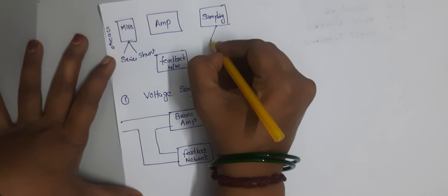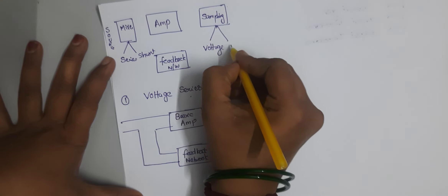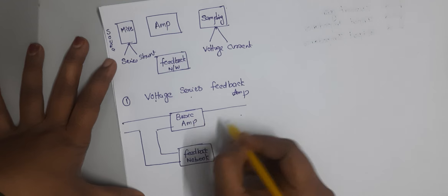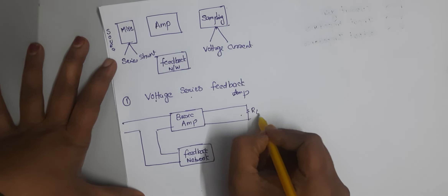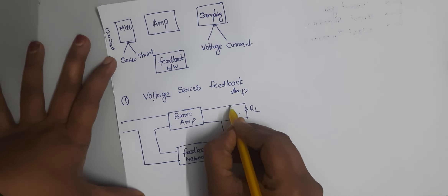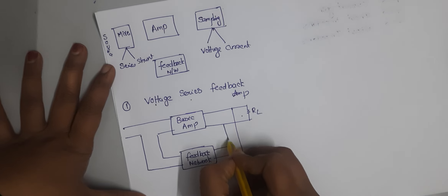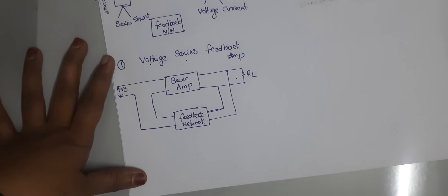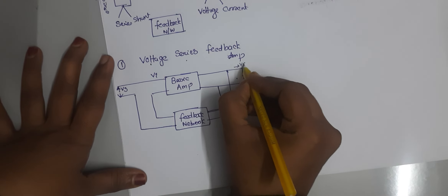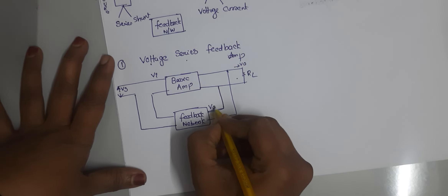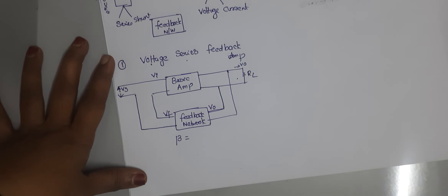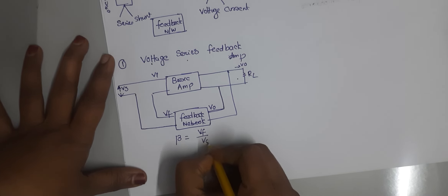Sampling again has two types: voltage sampling and current sampling. Voltage sampling means it is at the output port — a shunt connection. This is the load resistance RL, and this is voltage sampling. So here we have voltage source Vs, input voltage Vi, and output V0. Part of the output V0 is given to the feedback network as Vf. The feedback factor beta is equal to Vf divided by V0.